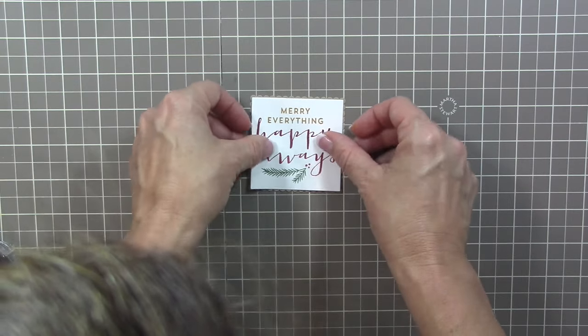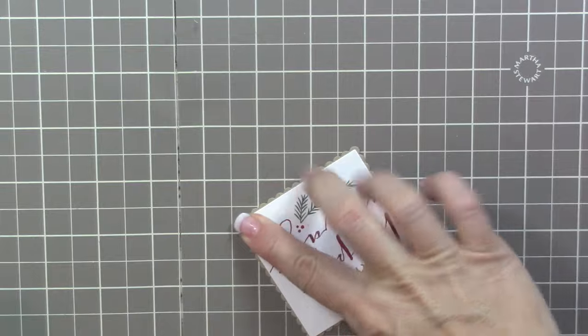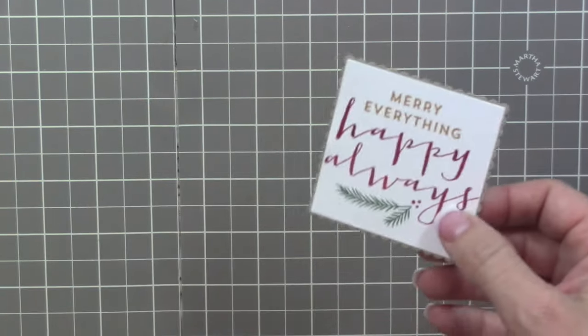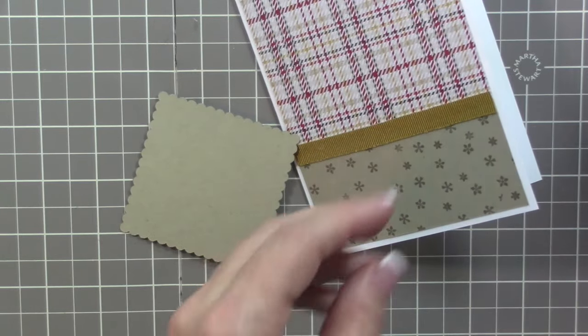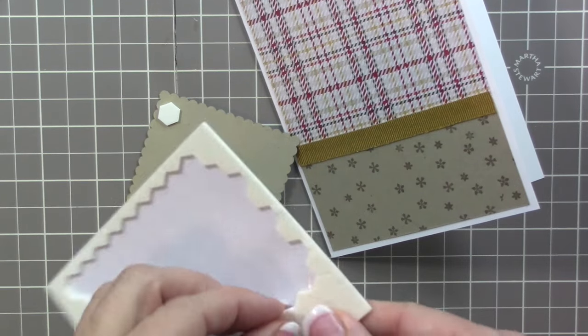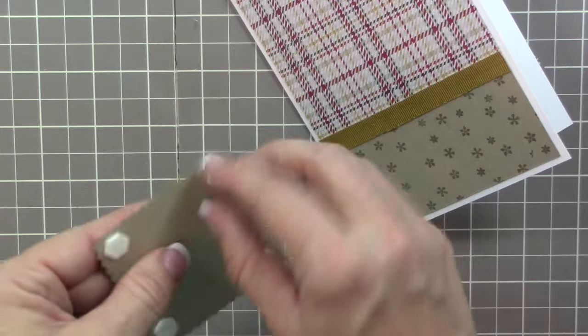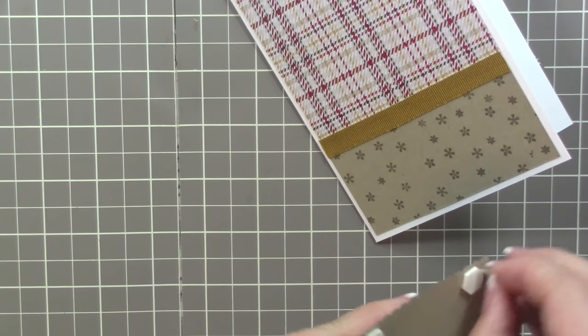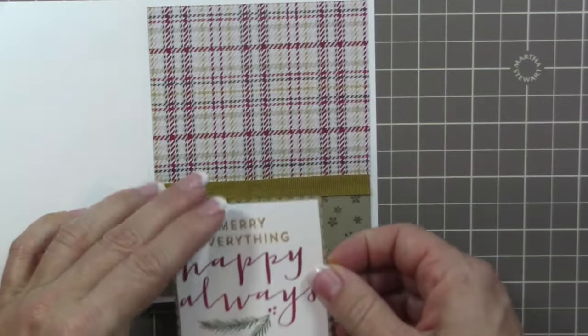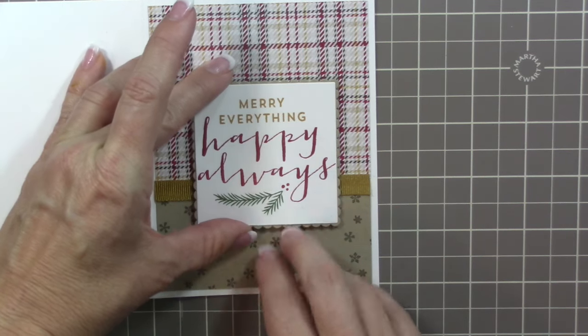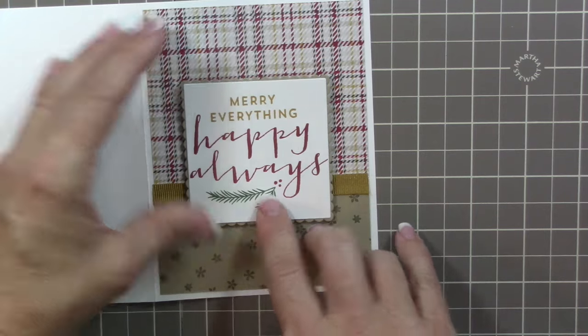I'm just going to use snail to adhere that. Now I'm going to bring the card back in. I'm going to adhere that using dimensionals, and it's going in the lower part of the card, so it just straddles the ribbon. Just remove the backing sheets of your dimensionals and then just pop that up on the card. You just want to have that stamped sentiment centered on the card.